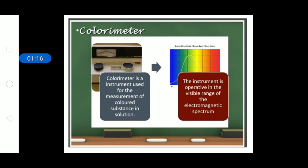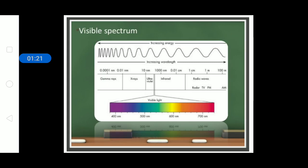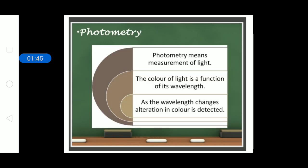The colorimeter operates in the range of visible light or the electromagnetic spectrum. Light has several parts — visible light along with infrared and ultraviolet domains. In the colorimeter, these domains are of importance. Photometry is the measurement of light; it involves the color of light as a function of its wavelength, and when wavelength changes, alteration in color is detected.